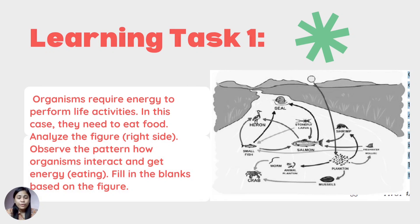For our first learning task number one, organisms require energy to perform life activities. In this case, they need to eat food. Analyze the figure at the right. Observe the pattern of how organisms interact and get energy through eating, and fill in the blanks based on the figure.